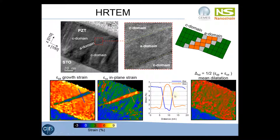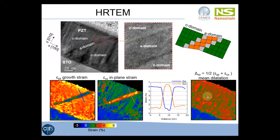For curiosity, we can calculate the average of these two images, which we call the mean dilatation. The value is constant throughout the layer because in any region the average is always (A + C) / 2.